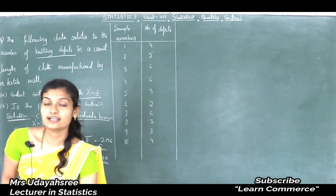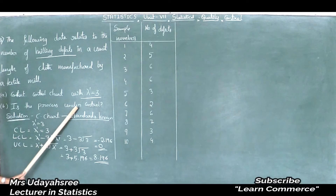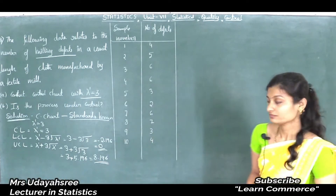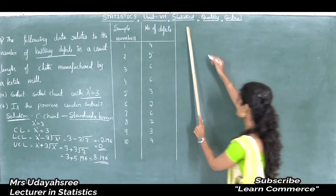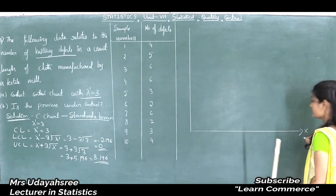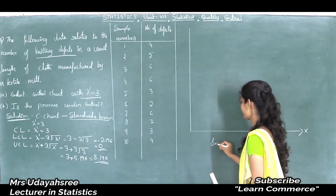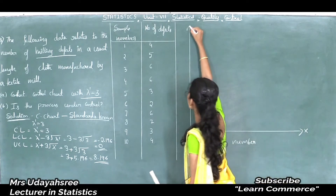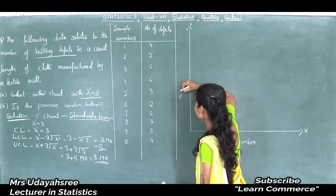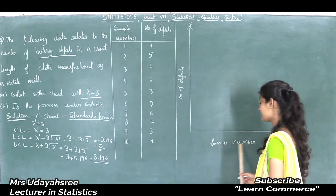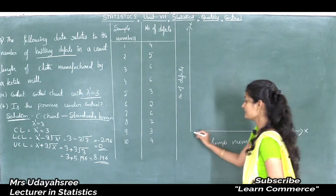Now let us see the second sub-question: is the process under control? To check whether the process is under control, we have to construct the C chart. The x-axis is along with the sample number, and the y-axis is along with the number of defects. In the x-axis, the sample numbers are marked accordingly.